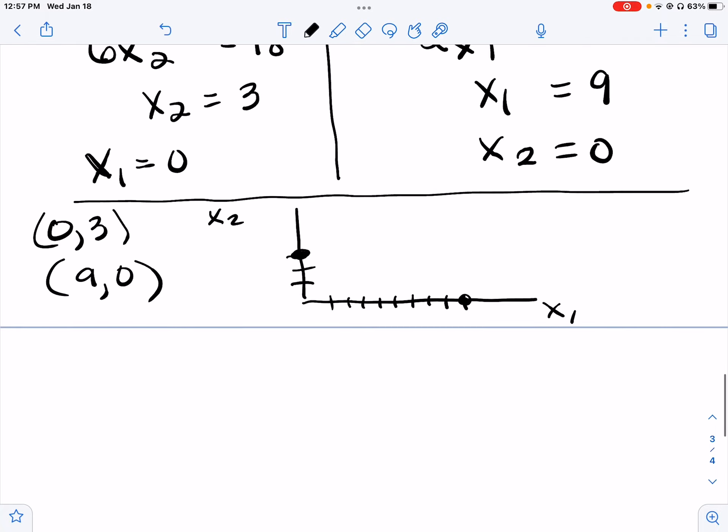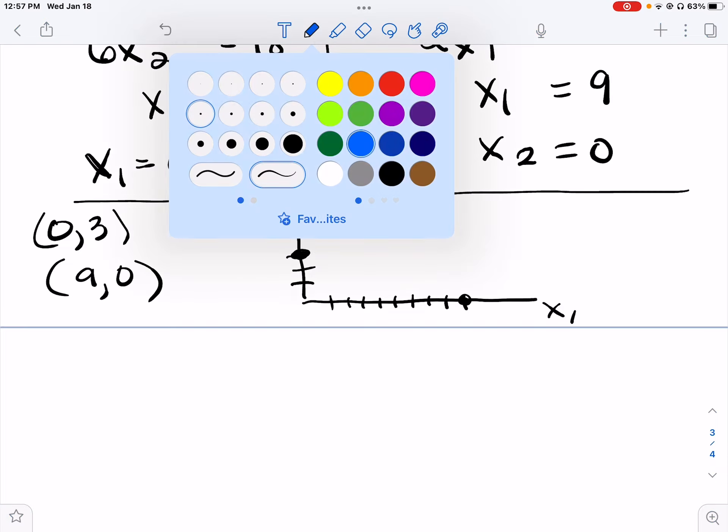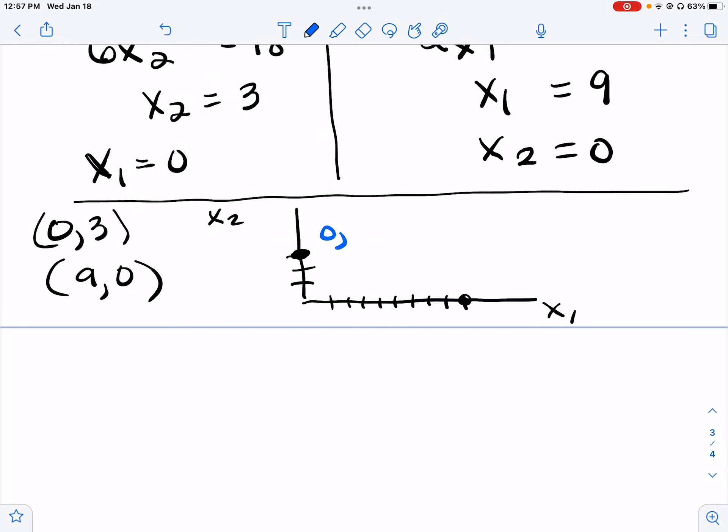Okay, so there's our point. When x1 is 0, x2 is 3. So that means over 0 and up 3. Okay, so this is the point 0, 3 right here. The second point was x1 equals 9 when we plugged in x2 equals 0. So this is the point 9, 0.